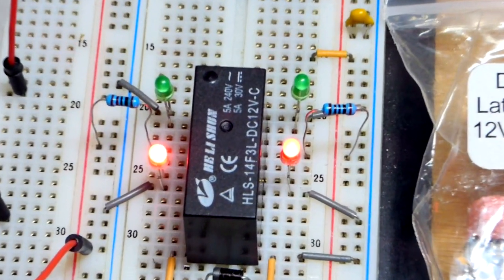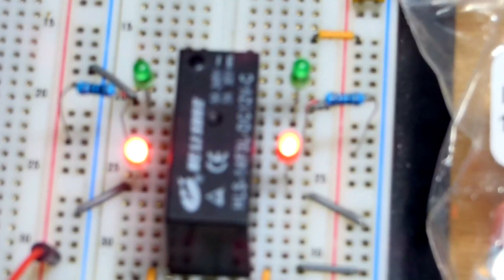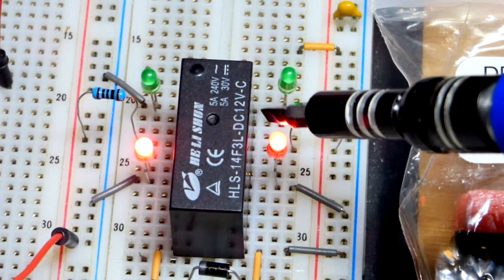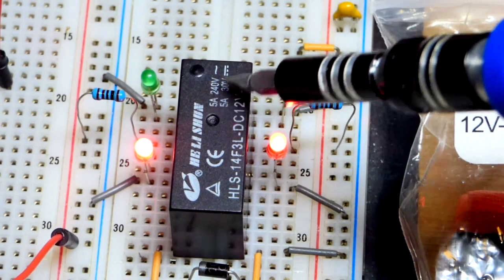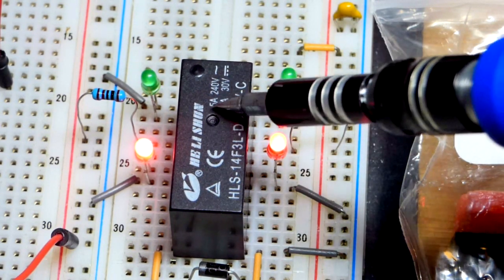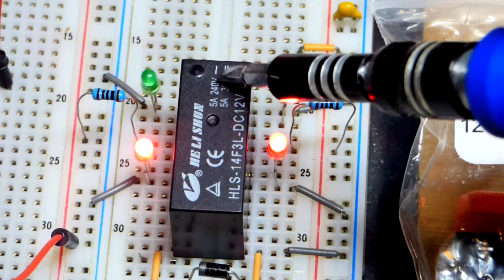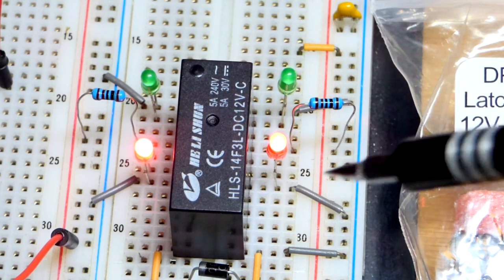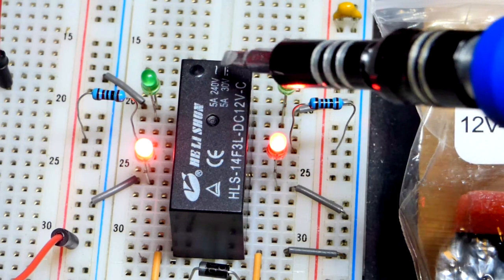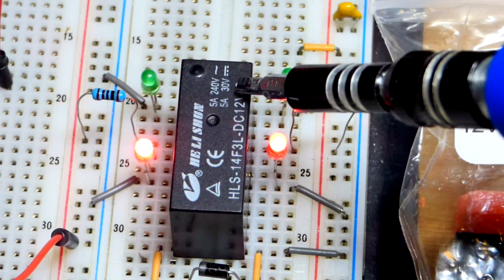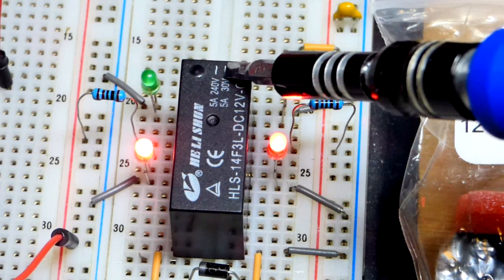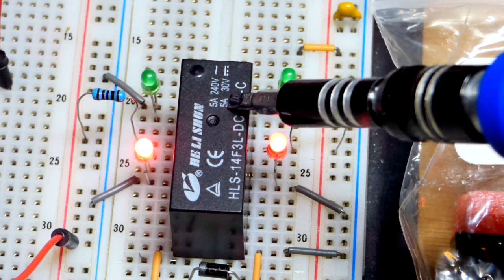Nice thing about relays is they tend to have this information on there. We have DC 12 volts right there - that is for the relay. Up here, this is for the switches, so it says 5 amps at 240 volts. That's the maximum you'd want to do - that's alternating current. When it comes to direct current, you want to limit it to about 30 volts or 5 amps but limit to 30 volts DC.